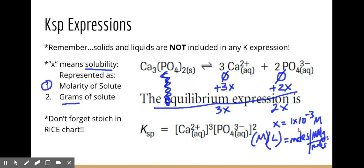You might ask which molar mass to use — the phosphate ion, the calcium ion, or the solid. Solubility means the molarity or grams of your solute, and your solute is the solid you started with, so use the molar mass of that solid. If given grams and you need to find X to plug into a K expression, convert grams to moles, then divide by liters to get molarity. Know how to convert between molarity and grams of solute for solubility — don't forget stoichiometry and your RICE chart.